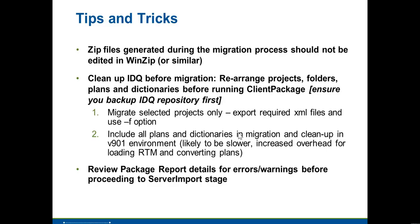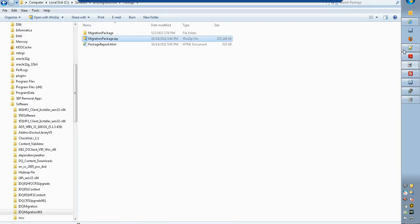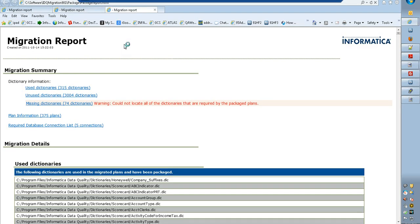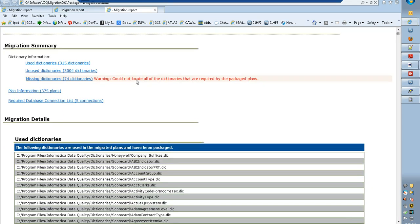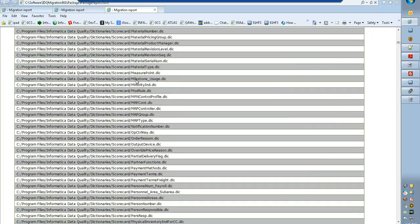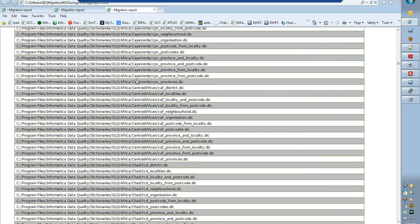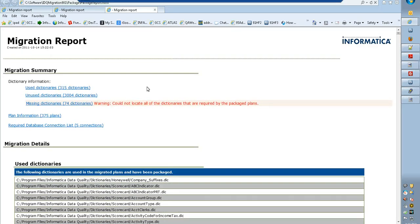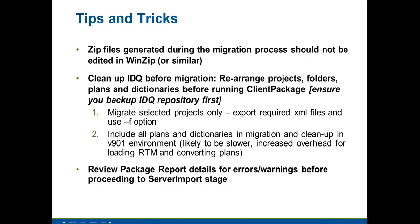It is best practice to clean up the data quality plans you want to use instead of bringing everything from 8.6.2. It is also highly recommended that you review all items in the HTML report from the client package output — that is the first step. Make sure all dictionaries, plans, and connections listed are correct, and if there are any warnings, check and resolve them. Importing the migratedmappings.xml should bring all your 8.6.2 plans into 9.0.1 compatible mappings, which you can view and run in the developer.